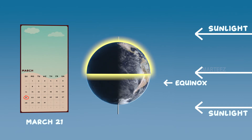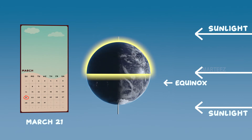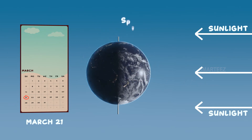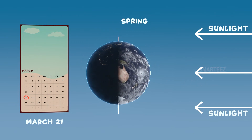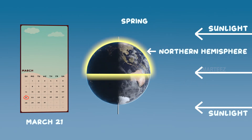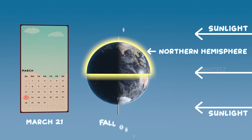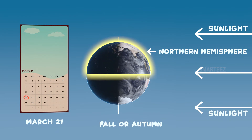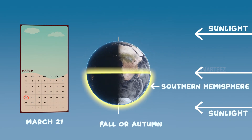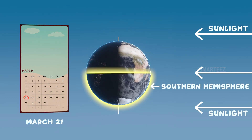Equinox — that's a new word. Equinox means equal day and night. Spring starts on this day in the northern hemisphere, and fall or autumn starts in the southern hemisphere.